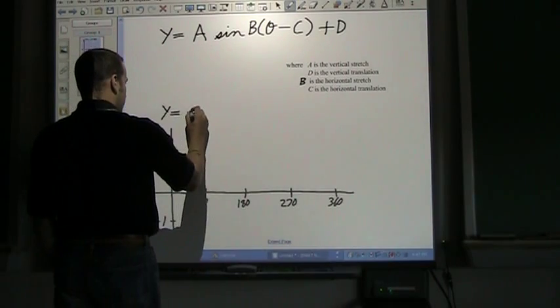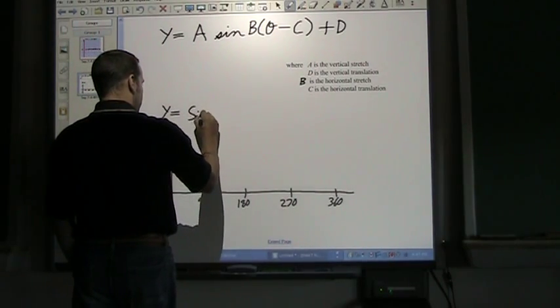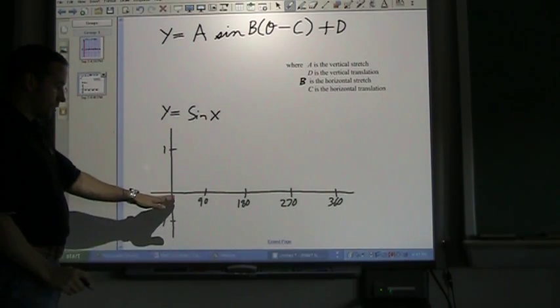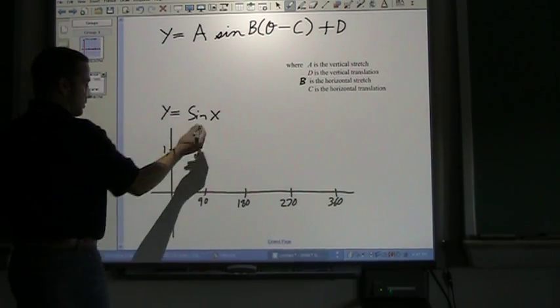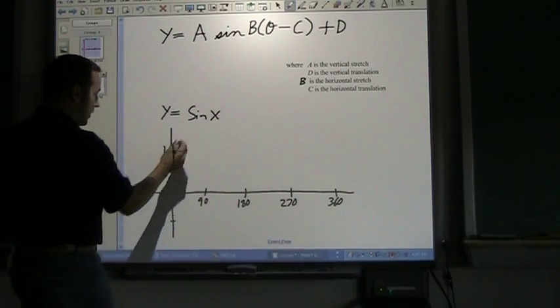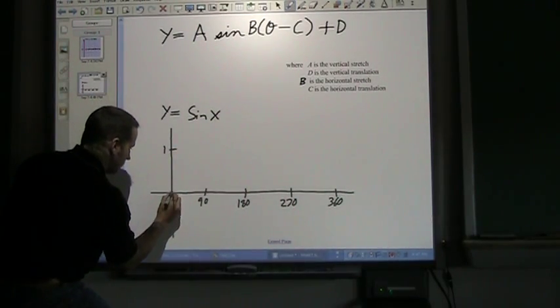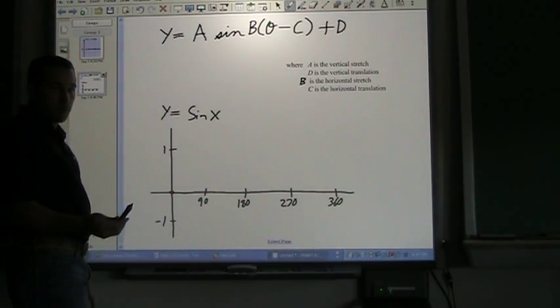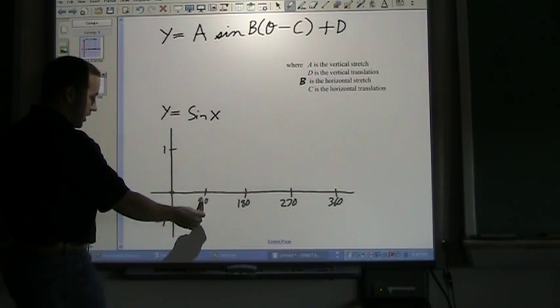So a normal sine wave, just y equals sine x, is going to look like this. We start at zero degrees. At zero, the value of sine of zero is zero.